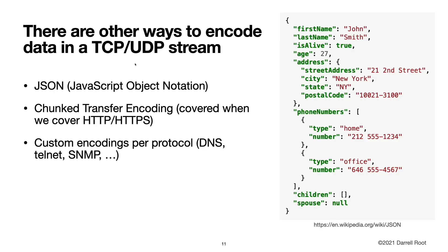There are other ways to encode data in a TCP/UDP stream. We have JavaScript Object Notation (JSON). HTTP and HTTPS can use chunked transfer encoding, which we will cover later. And there are many protocols with their own custom encodings. For example, with JSON you have a left curly brace and you know that message ends when you get to the corresponding right curly brace — you read in your message and process it as text, which can be a little inconvenient, but that's what libraries are for. So there are other options besides type-length-value encoding.